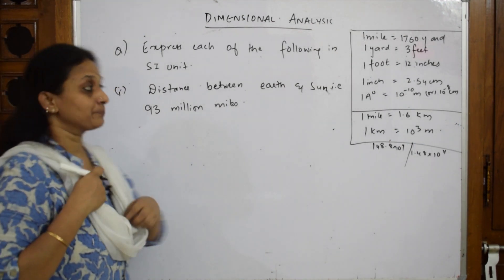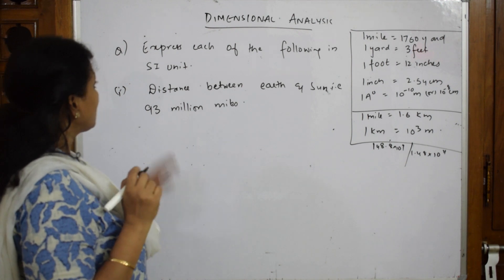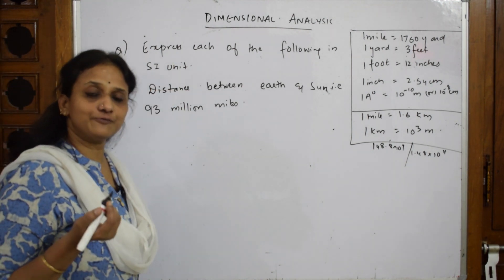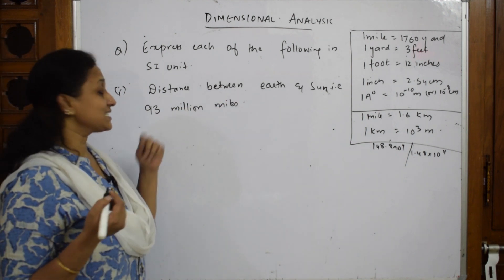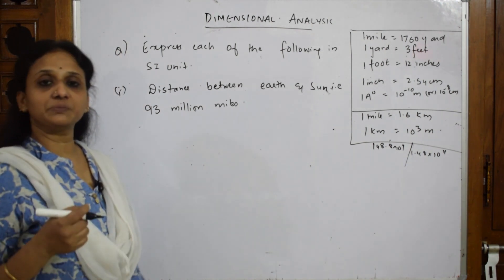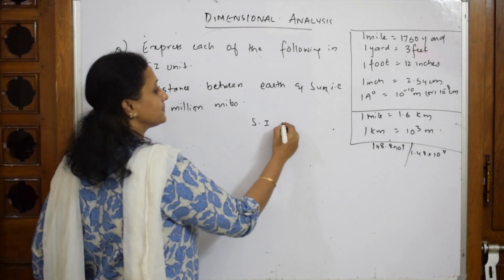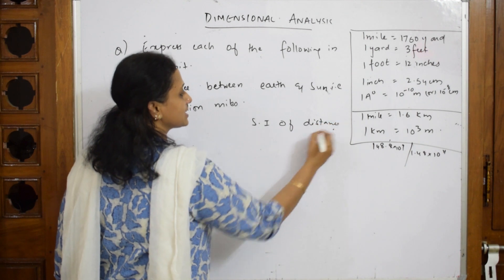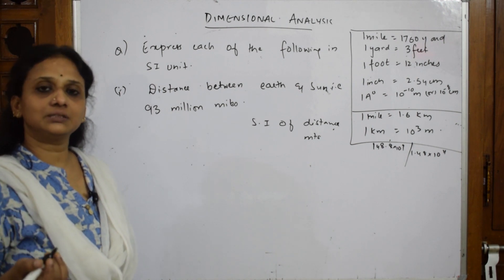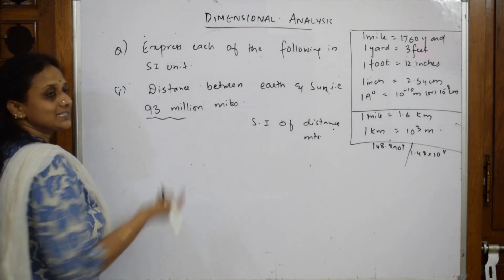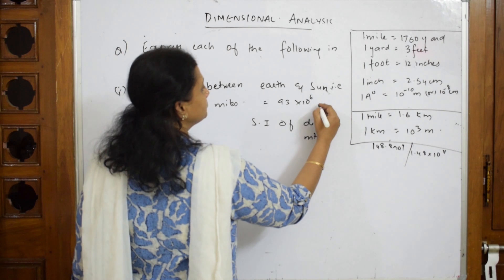Now the next question is based on distance. The question says: express each of the following in SI unit. The distance between Earth and Sun is 93 million miles. I need to convert this into the SI unit for distance, which is meters.